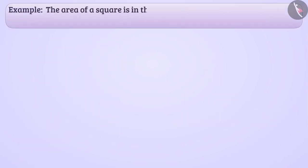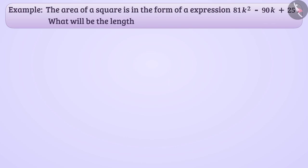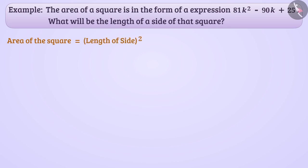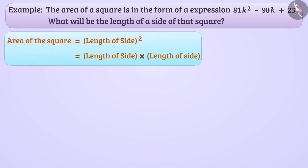The area of a square is in the form of the expression 81k square minus 90k plus 25. What will be the length of a side of that square? We know that the area of a square is the square of the length of the side — we can write it as length of the side multiplied by length of the side. So the length of the side is a factor of the area. To find the length of the side, we have to factorize the given expression.